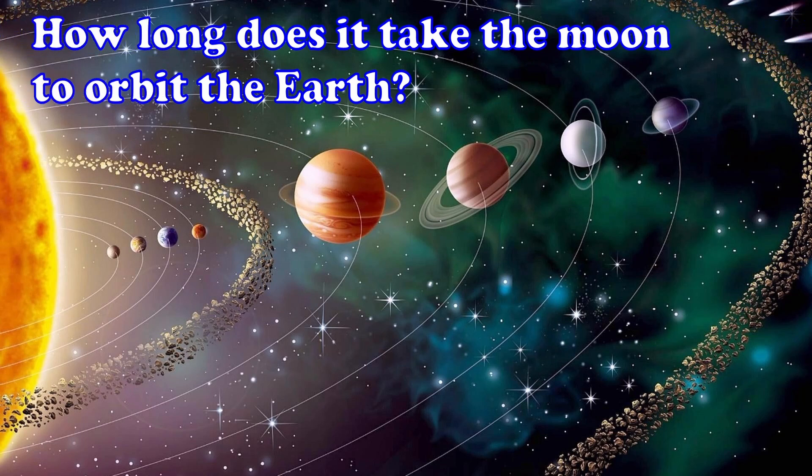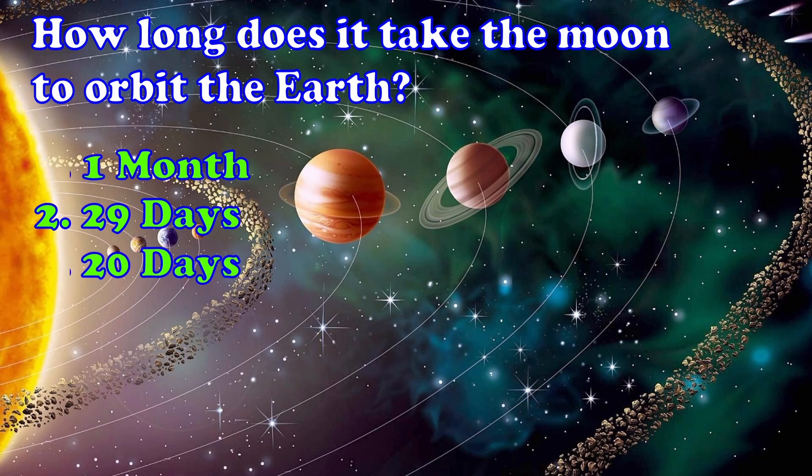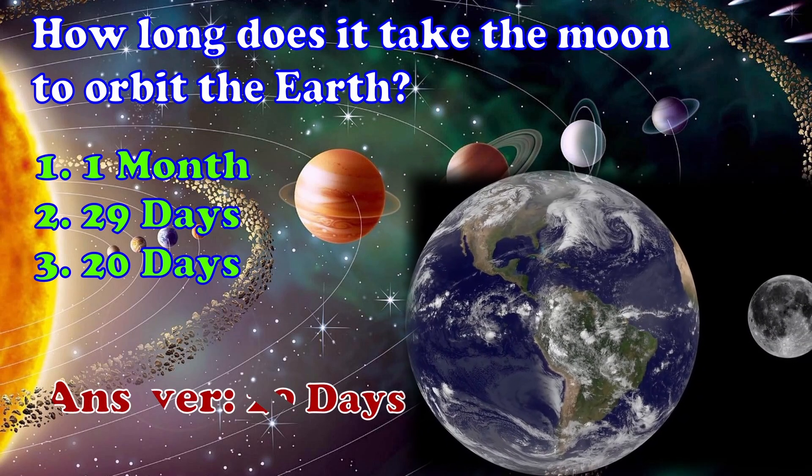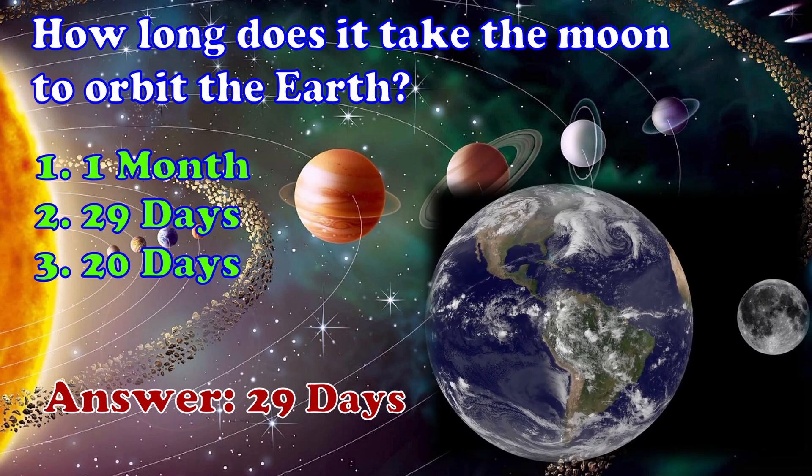How long does it take the moon to orbit the Earth? The answer is 29 days.